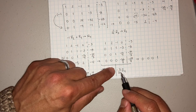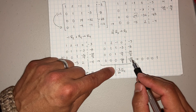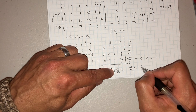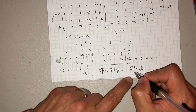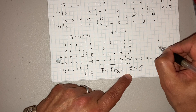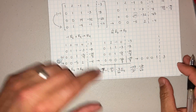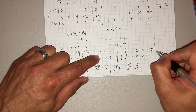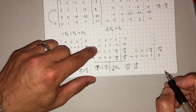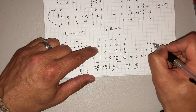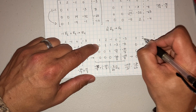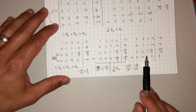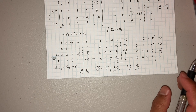Multiplying by the reciprocal: negative 198 over 7 times negative 7 over 66 — the sevens cancel, and the negatives make a positive — so you get 3. So now we have row echelon form with 0, 0, 1, negative 16 over 7, negative 34 over 7; 1 and then 0, 0, 0, 1, 3; 0, 1, 1, negative 3, negative 8; and 1, 2, negative 1, 0, negative 3. You can see those nice ones diagonally across, and now I can start rewriting the system.